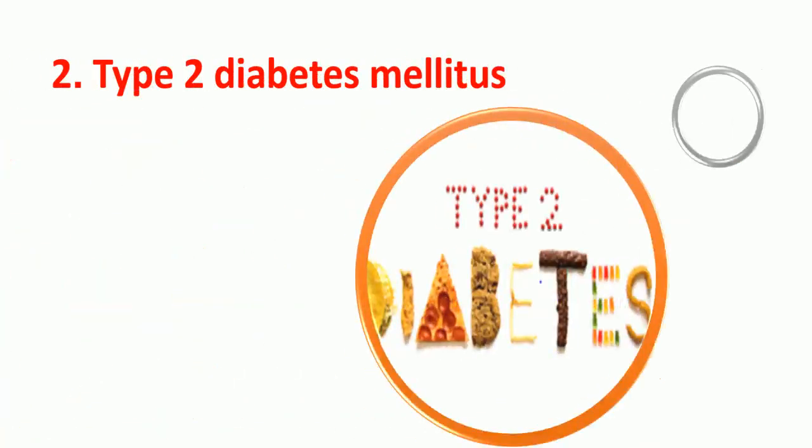2. Type 2 diabetes mellitus. There is a strong association of type 2 diabetes mellitus with obesity. Obesity often exacerbates the diabetic state, and in many cases weight reduction often leads to amelioration of diabetes.